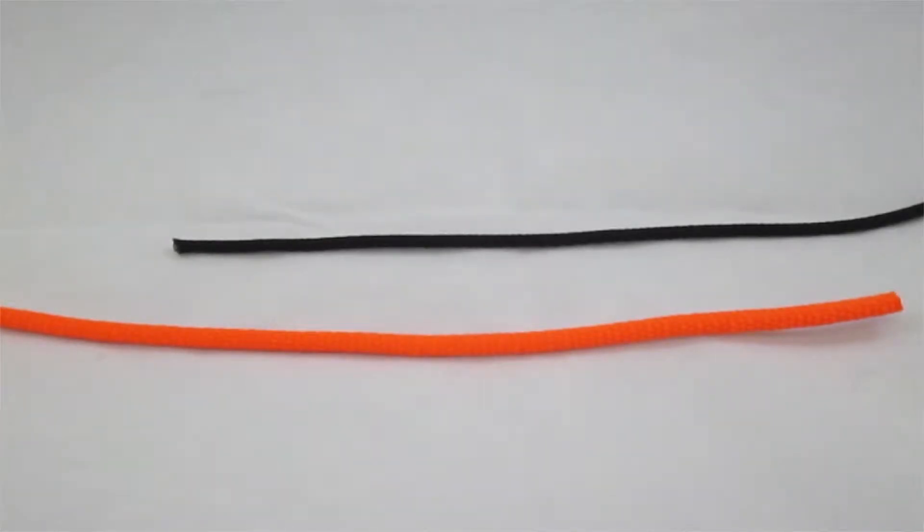In today's video we will show you how to do a sheet bend knot. This is commonly used when securing two ropes together that are different sizes.